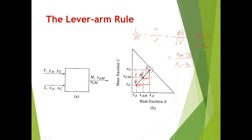I don't suggest that you use this, but since it's discussed in the book, I'm discussing it here as well so you know what the inverse lever arm rule is. If it's L over V, it would be the other base or altitude of the triangle for L and V — the small triangle, since we don't have M. The inverse lever arm rule requires that you know two of the three streams to determine the third, which can also be done using material balance.